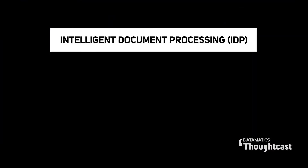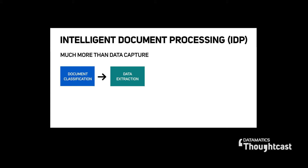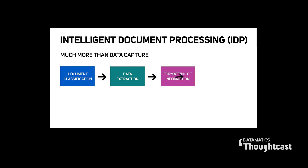So let's start with the IDP definition. IDP stands for Intelligent Document Processing, which means it's not just data capture. It involves document classification, capturing information from unstructured documents, verifying and validating the information, then formatting it to the desired level and putting it into the downstream applications. So classifying, extraction, validation, formatting, and putting it to the downstream application — the whole thing is IDP, not only the data capture.